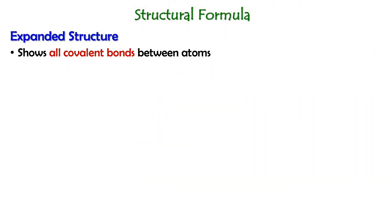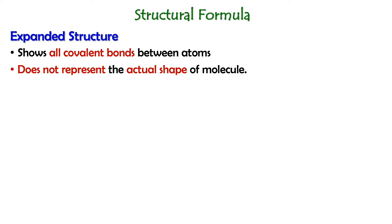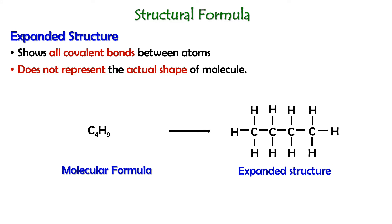The first one is expanded structure. Expanded structure shows all covalent bonds between atoms, but it does not represent the actual shape of the molecule. For example, if we have a molecule with the molecular formula C4H9 and convert it into expanded structure, all of the covalent bonds between carbon and hydrogen atoms are shown in this structure.